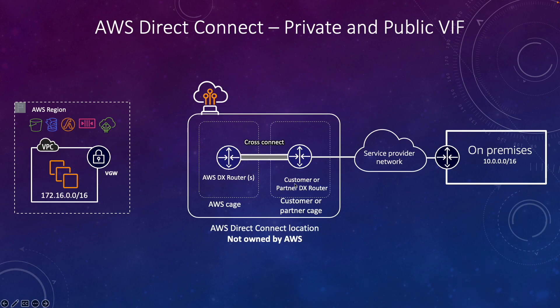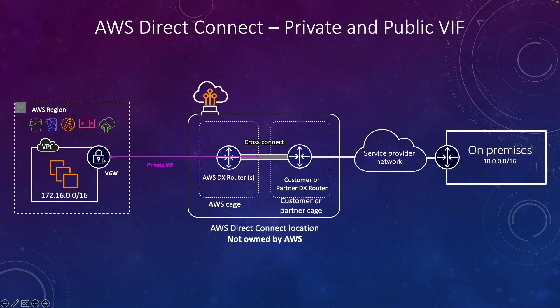Talking about private and public VIF: here I have my on-prem data center which is connected to the Direct Connect location and there's a cross connect already there. Now if we need to access any resources within the VPC then we need to create a private VIF. For the private VIF you need to have a virtual private gateway which is attached to a VPC, and you will create a VIF using that. After that you can access any resource within this VPC.